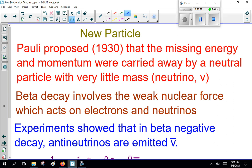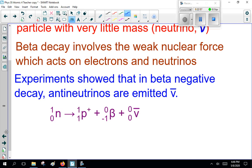Now, right off the bat, that is a horrible font. It's supposed to be written like that. I just cannot do this on this computer. Anyway, beta decay involves the weak nuclear force, which acts on electrons and neutrinos. Now, experiments showed that in beta negative decay, anti-neutrinos, the opposite of neutrinos, were emitted. So, this goes like this with a bar above it to show it is an anti-neutrino.